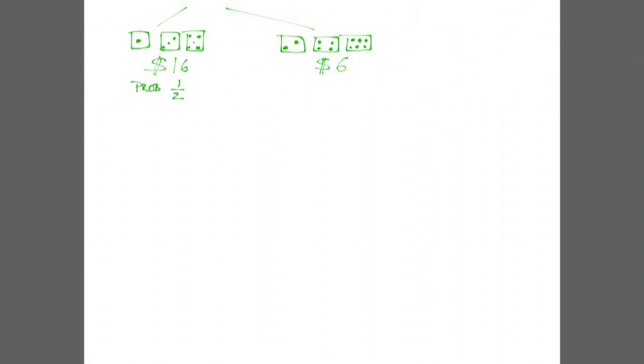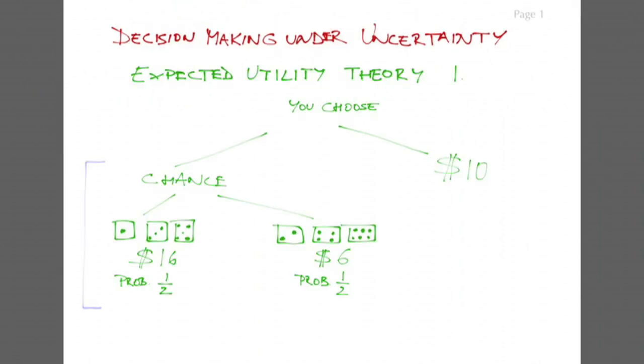Clearly the probabilities of the two possible outcomes, even and odd, will have a lot to do with your decision. In this case the probabilities are 1/2 and 1/2. The list of possible outcomes together with their probabilities is called a lottery. So how would you evaluate this lottery and compare it with your other option, which is 10 with certainty?